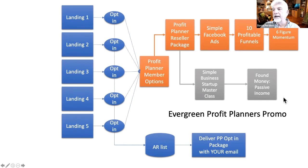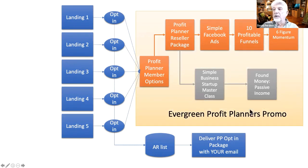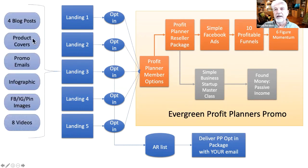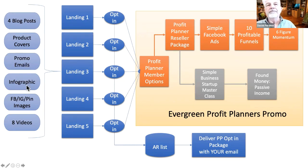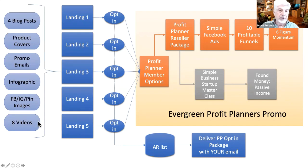So what do you have to do? Drive traffic — that's it. We give you four blog posts you can use on your WordPress site, product covers you can use anywhere, three promo emails, an infographic, eight Facebook and Instagram and Pinterest images, and eight videos. Your goal is to drive traffic with all this content to any of these landing pages.